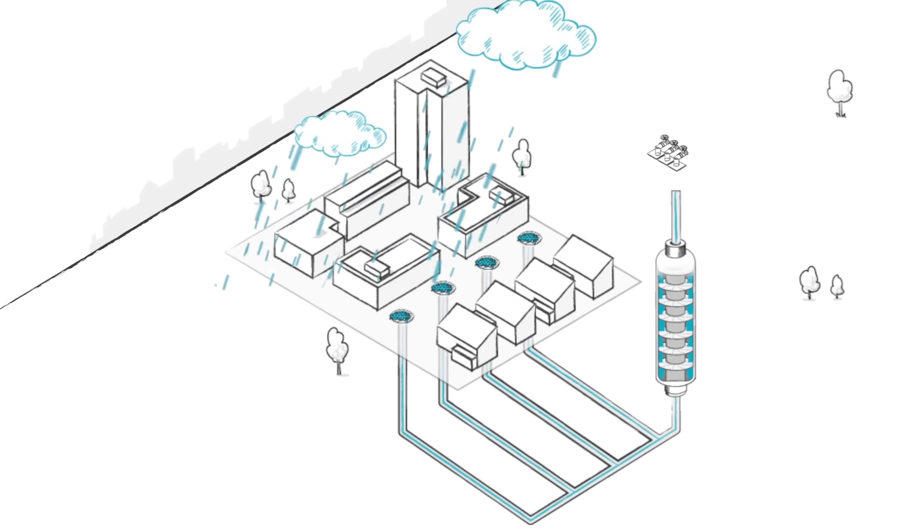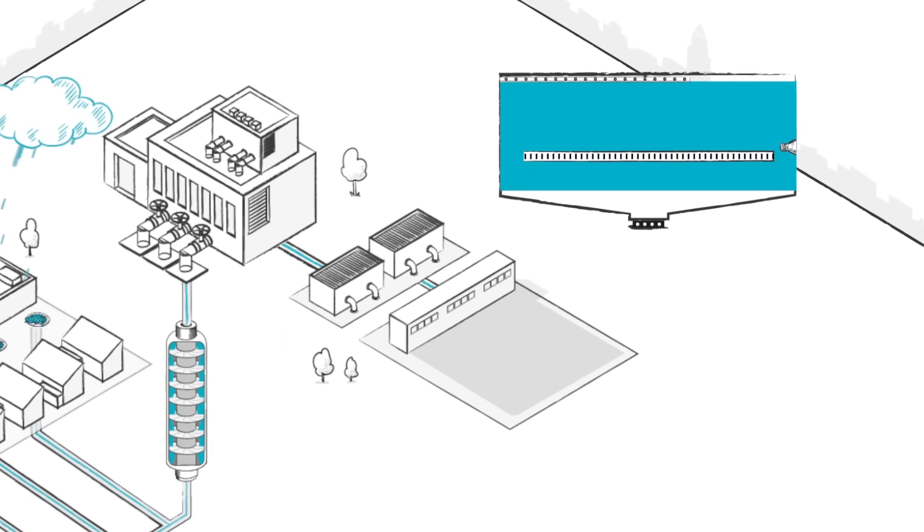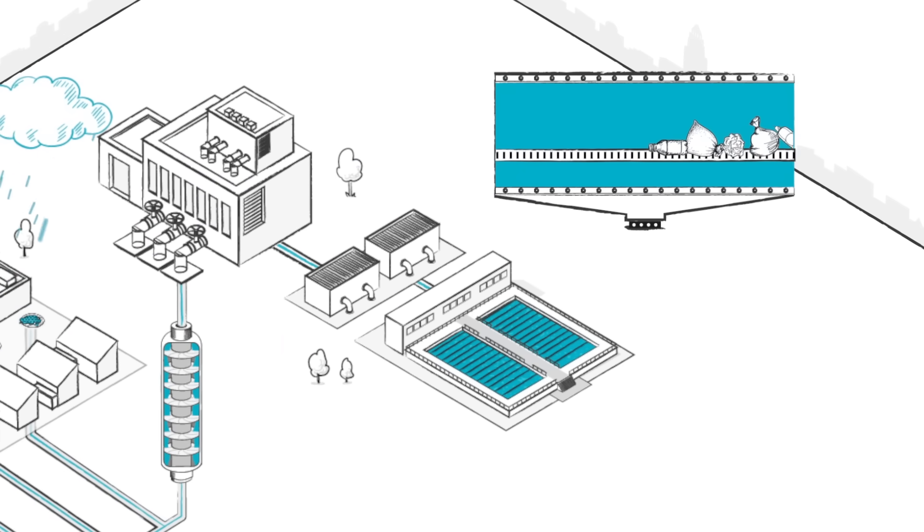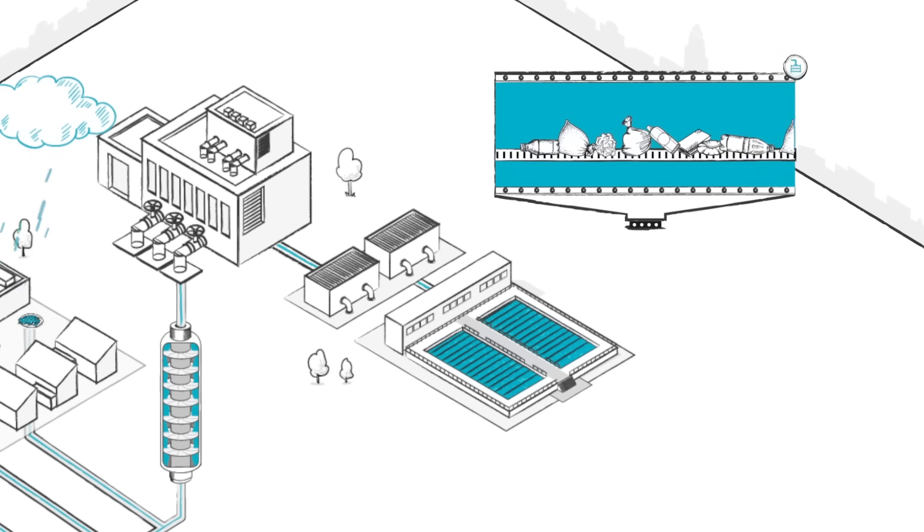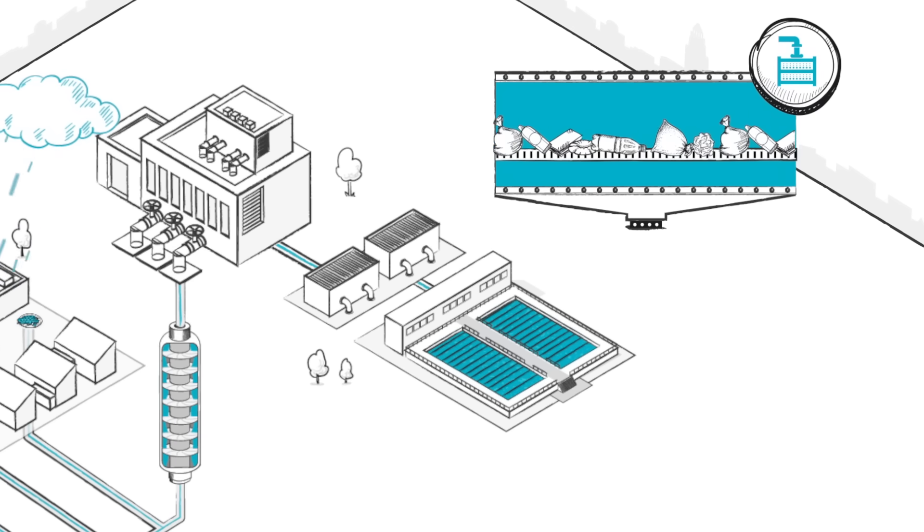Water is brought up from underground using Archimedes screws and is screened to remove trash—such as plastic bags, bottles, and flushable wipes—using tightly spaced bars.